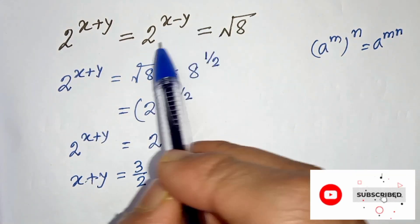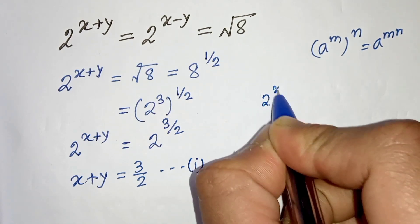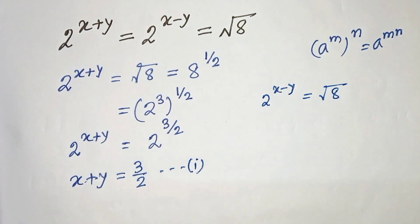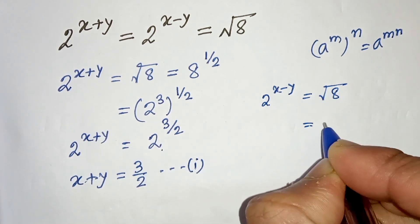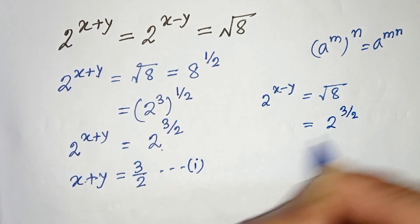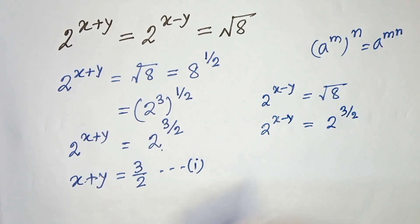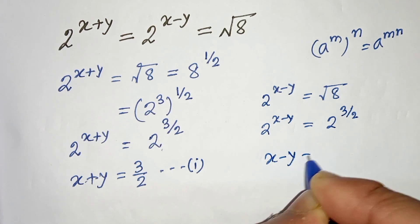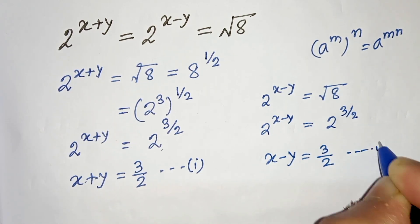From this we can write 2 to the power x minus y is equals to root 8. And root 8 can be written as 2 to the power 3 by 2. So 2 to the power x minus y equals to 2 to the power 3 by 2, and from this we can write x minus y equals to 3 by 2. This is our equation 2.